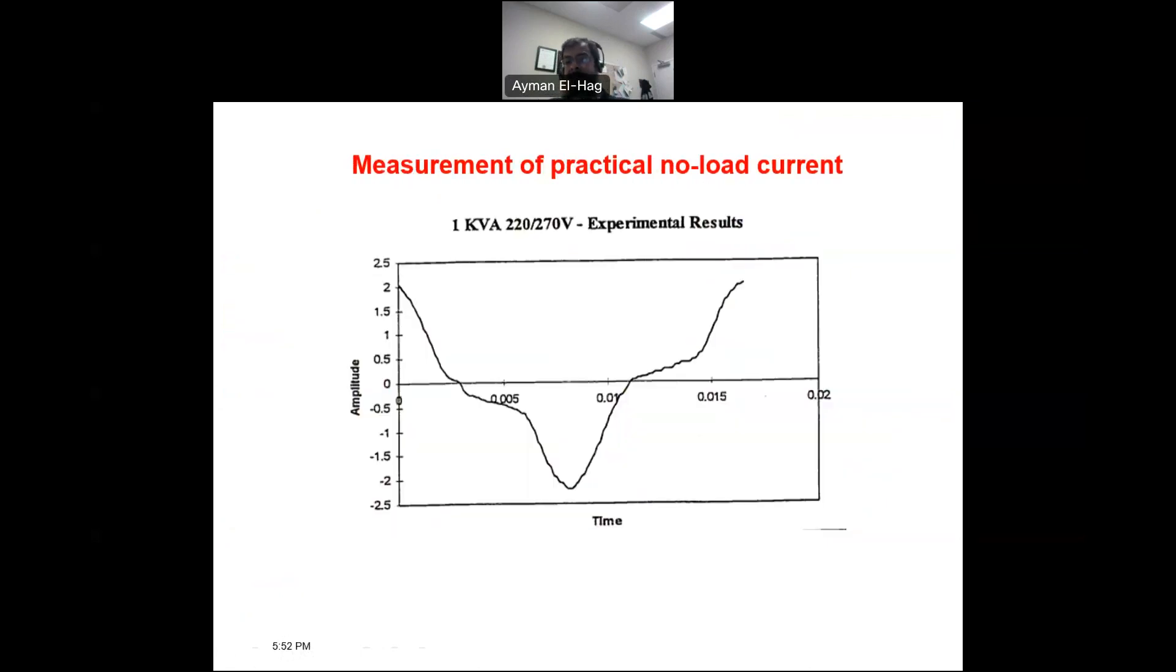The last question I'd like to answer is when you go and measure the current using an oscilloscope, it is a distorted current. It's not sinusoidal although my input is sinusoidal. So the voltage that I apply is sinusoidal. Why is my current not sinusoidal? This is a practical current that I measured maybe around 30 years ago, a long time ago. This is a 1 kVA transformer, 220 by 270. And I energized the transformer with 220 volt, I measured the current. You can see here clearly the current is not sinusoidal. Why is that?